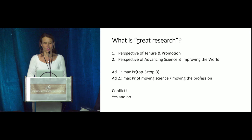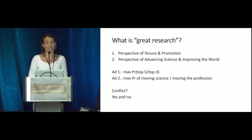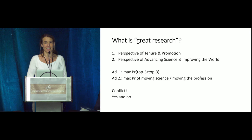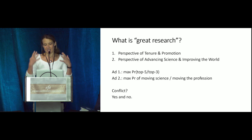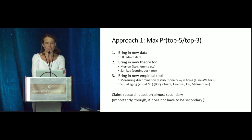For perspective one, we're looking for strategies to maximize top-five economics or top-three finance journal publications. For perspective two, we want to maximize the probability that we make our colleagues and the profession think differently about what's important, move science forward, and have an impact on policy and real-world decision making. There is some conflict. At the beginning of your career it makes sense to focus on number one, but I urge you not to lose sight of number two.